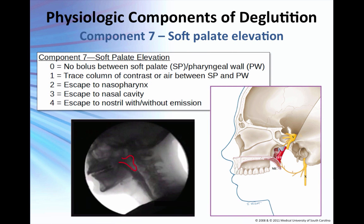Soft palate elevation and retraction: you score this at the height of the soft palate movement — the point of maximal upward and retracted movement, not when it's on its way up or on its way back. For any components involving movement, you want to take the point of maximal displacement.